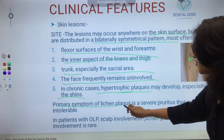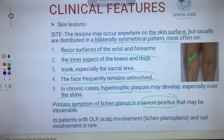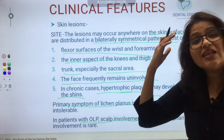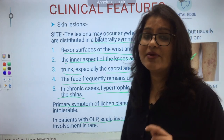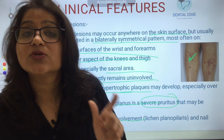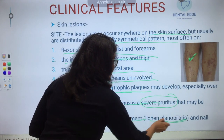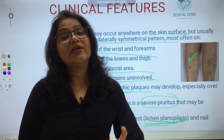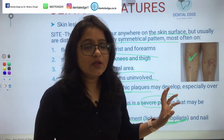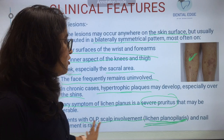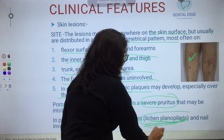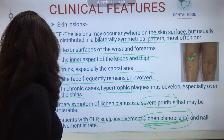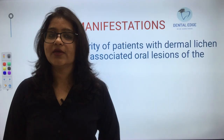The primary symptom of lichen planus skin lesions is severe pruritus that may be intolerable. Scalp involvement by lichen planus is called lichen planopilaris — remember this term. It is not very common with oral lesions, and nail involvement is also very rare.